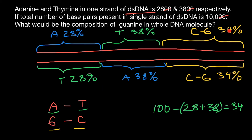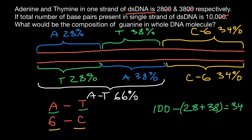If we combine all these percentages we get 100% on each strand, so 200% total. That means we have to reduce all numbers by half to get the composition of the double-stranded DNA. For example, adenine and thymine together is 28% plus 38% = 66%. And guanine and cytosine content is 34%. So the composition of guanine in the whole DNA molecule would be half of 34%, which is 17%.